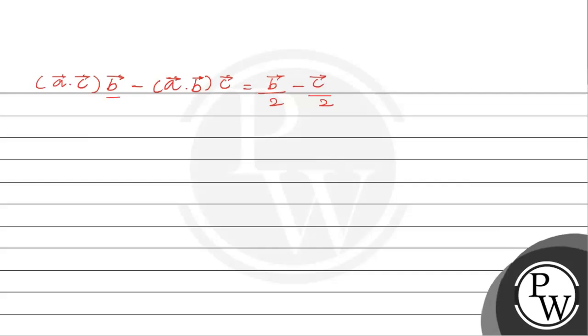So we have b and c on the left hand side and right hand side. So equating these two equations we will get a·c = 1/2, and a·b = 1/2, which are the coefficients.